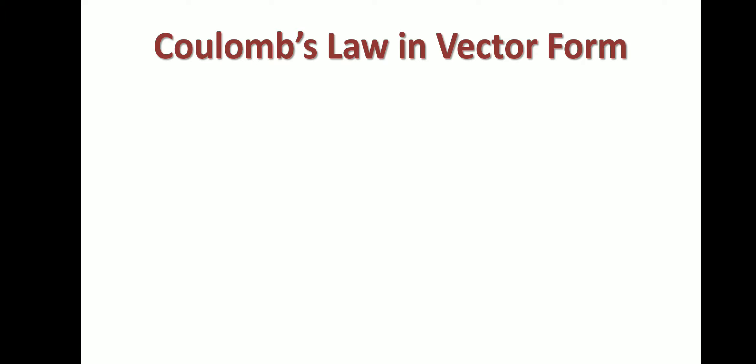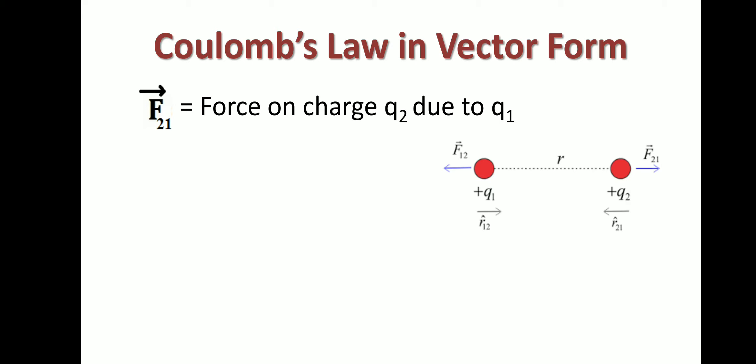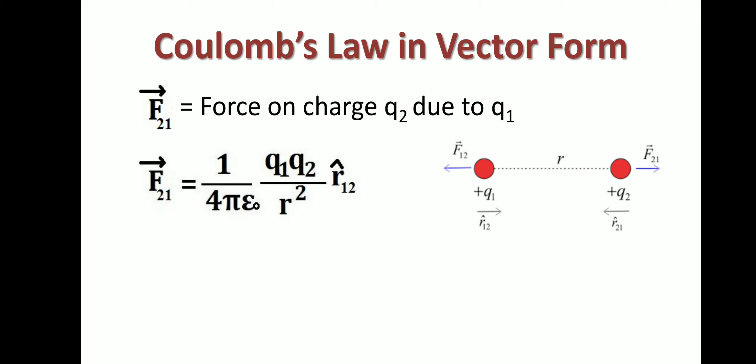For Coulomb's law in vector form, consider a system of two like charges +q1 and +q2. Like charges repel each other. F₂₁ is the force experienced by charge q2 due to charge q1, and F₁₂ is the force experienced by charge q1 due to charge q2. These two forces represent the repulsion between the charges. The expression for F₂₁ is: F₂₁ = (1/4πε₀) · q1·q2 / r² · r̂₁₂.